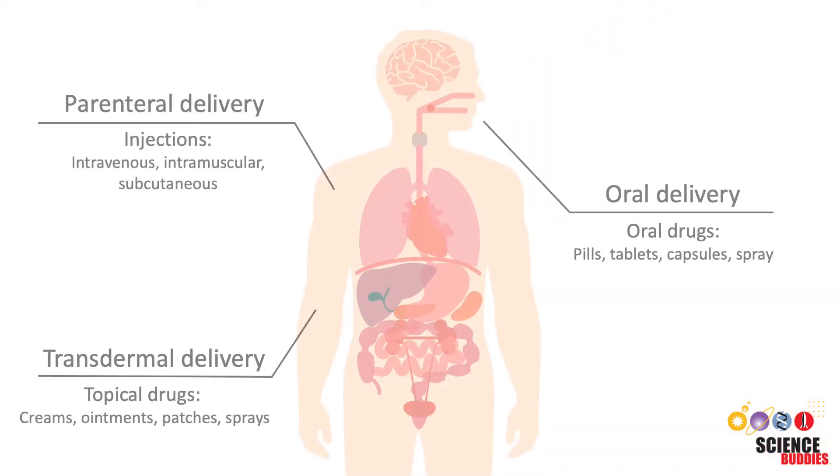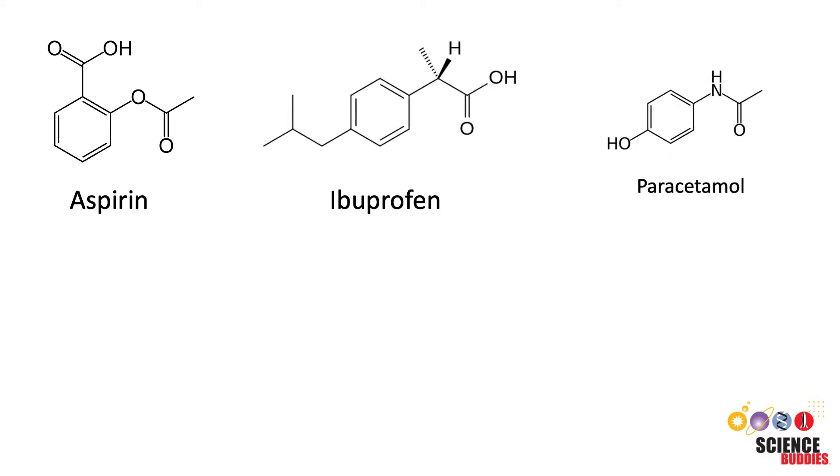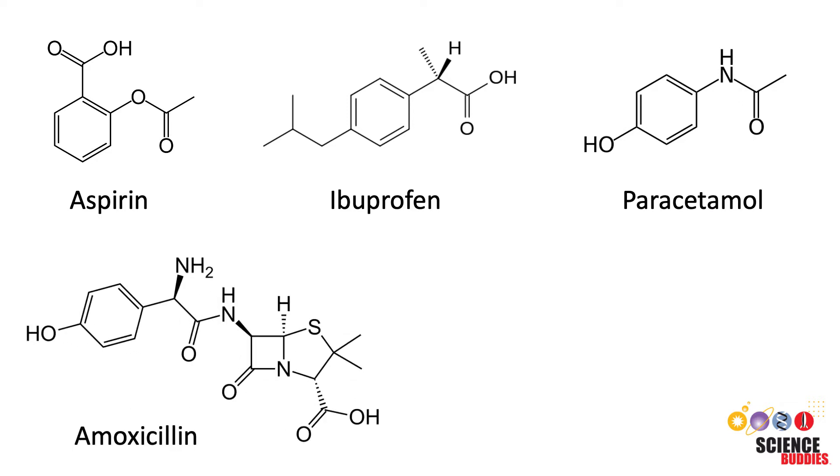Why does it matter how a medicine gets into the body? It matters because every drug is different. Each active ingredient in a drug has different chemical and physical properties. Each one functions in a different way and has to be delivered to the right location inside the body to be effective.